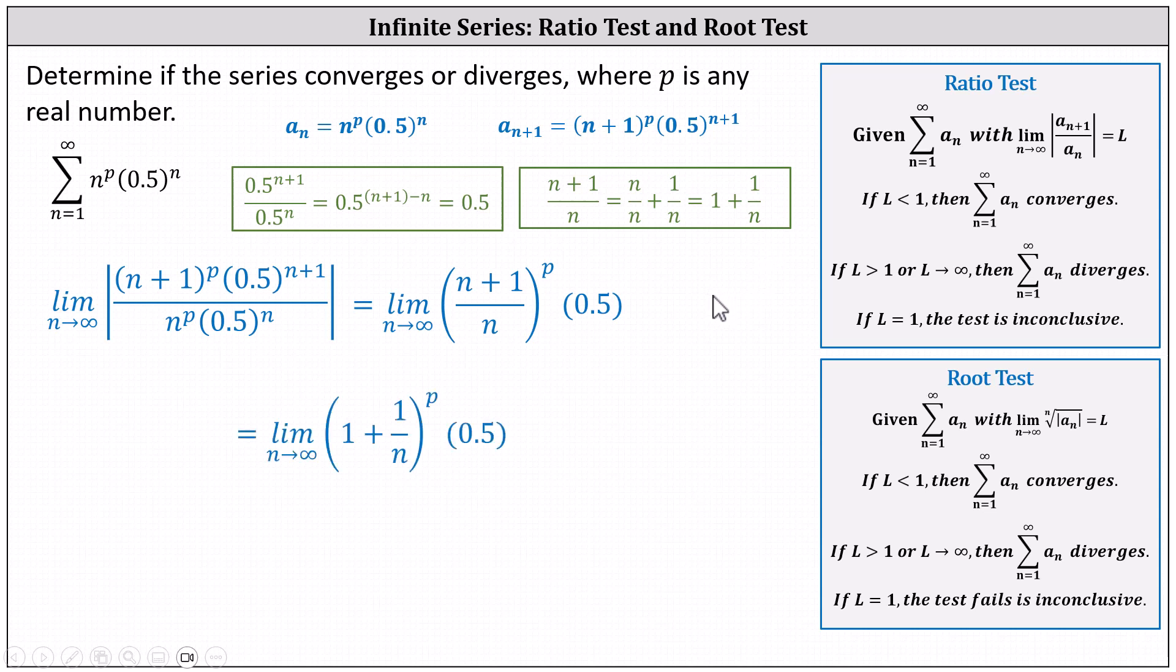This gives us the limit as n approaches infinity of the quantity 1 plus 1 divided by n to the power of p times 0.5.